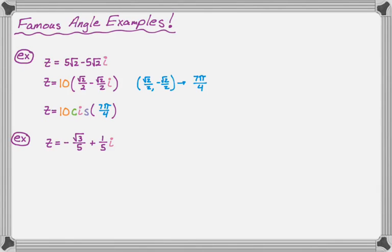Let's take a look at another one. So z is equal to negative root three over five plus one over five i. So I just focus on the numerator and I see a root three and a one. So root three over two and one half is definitely unit circle. Negative root three over two, one half, definitely unit circle. So I'm going to try to make that happen.